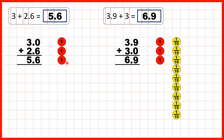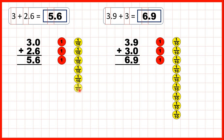We can also show what we did using place value counters. For the first question we started with three ones and we were adding 2.6. If we add the six tenths first — one, two, three, four, five, six — then we add the two ones — one, two — and that gives us five ones and six tenths, so 5.6.